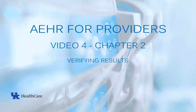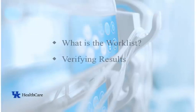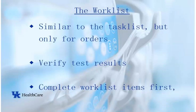This chapter will discuss verifying results using the Worklist in AEHR. The Worklist is similar to the Tasklist; however, the Worklist only shows items that pertain to orders. You will use the Worklist to verify test results for patients. Most of the items on the Worklist also appear on the Tasklist, but these items are more easily taken care of from the Worklist. If you remember to always check your Worklist first and then your Tasklist, the Worklist functions as a place where you view results and the Tasklist can be purely for administrative items like phone calls and paperwork.